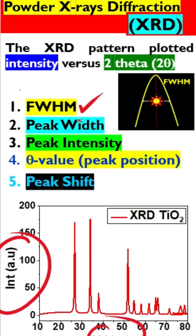The second important thing is the peak width. Look at the width of the peak here — from this width we can understand whether our material is a single crystal, fully crystalline, or amorphous.